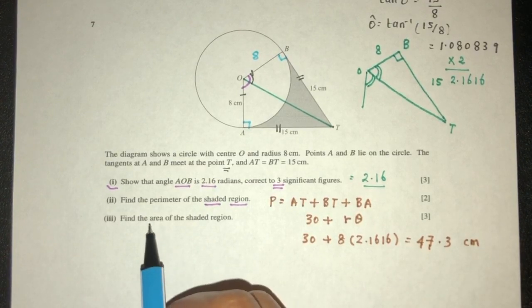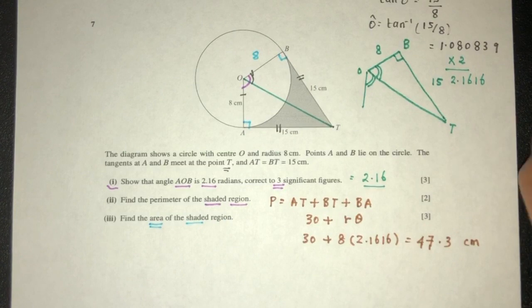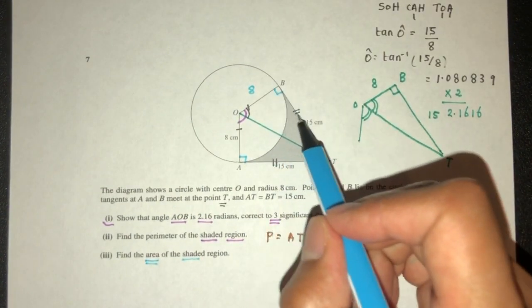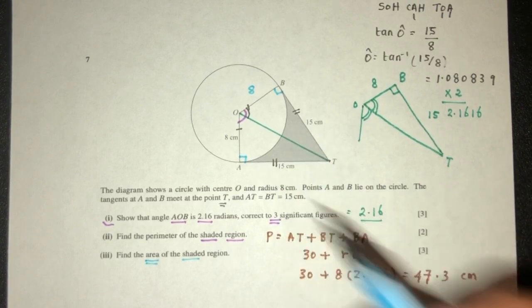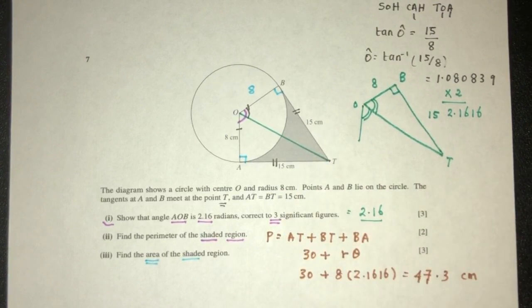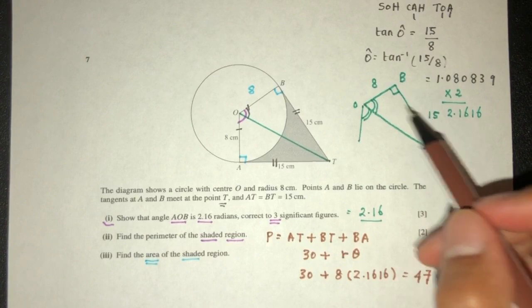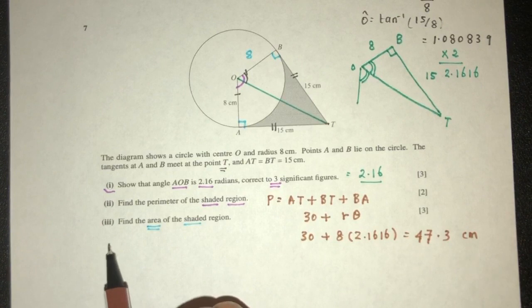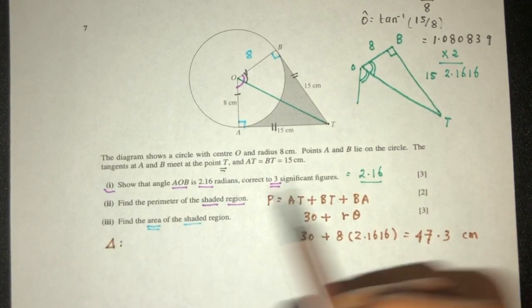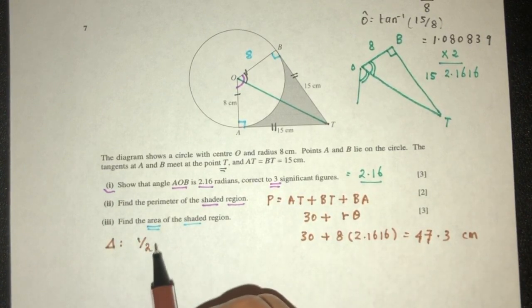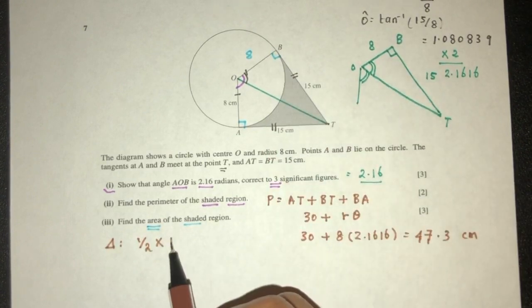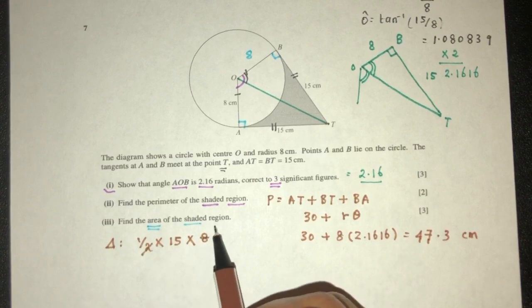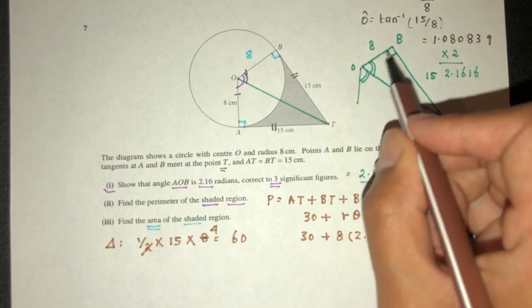Now finally, if you want to find the area of the region, we can just use this one, for example. We can first find this one and then multiply by 2 to find this one. So we can first find the area of the whole triangle. Because it is a right-angled triangle, we can do half times base. It's 15 times the height, it will be 8. That should be 4 here, 60. That's the area of this triangle.